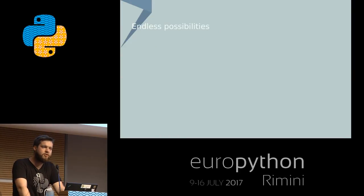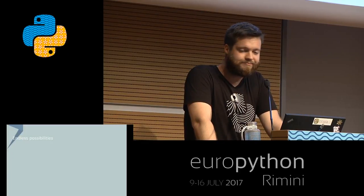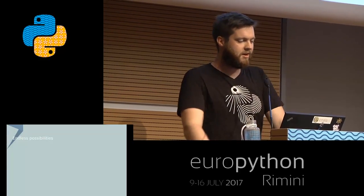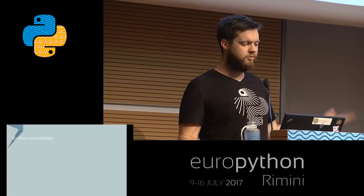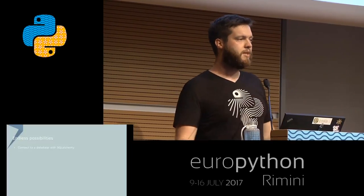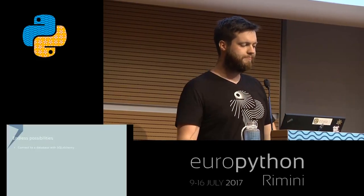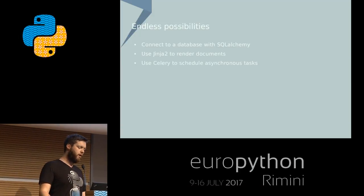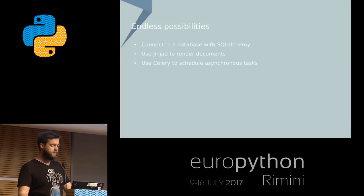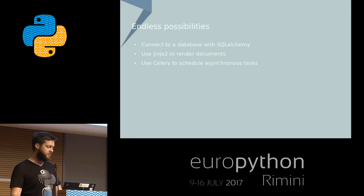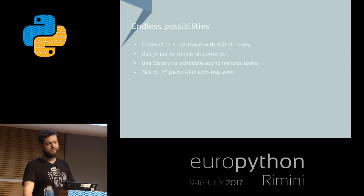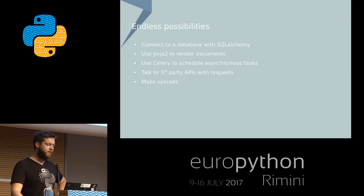Those are the things I wanted to mention — of course only the things I use mostly with Werkzeug. Please take a look at the great documentation if you want to see what other things there are. If you have a Werkzeug application, you can just do anything on top of it. You can connect to a database — we use SQLAlchemy, but you can use your favorite ORM. You could use Jinja2 to render documents, which we do for example to render PDF documents. Use Celery to schedule tasks asynchronously, or any other task runner. Talk to third-party applications with requests to call other APIs. Make syscalls and go wild — remote control a robot to wash your dishes or whatever.